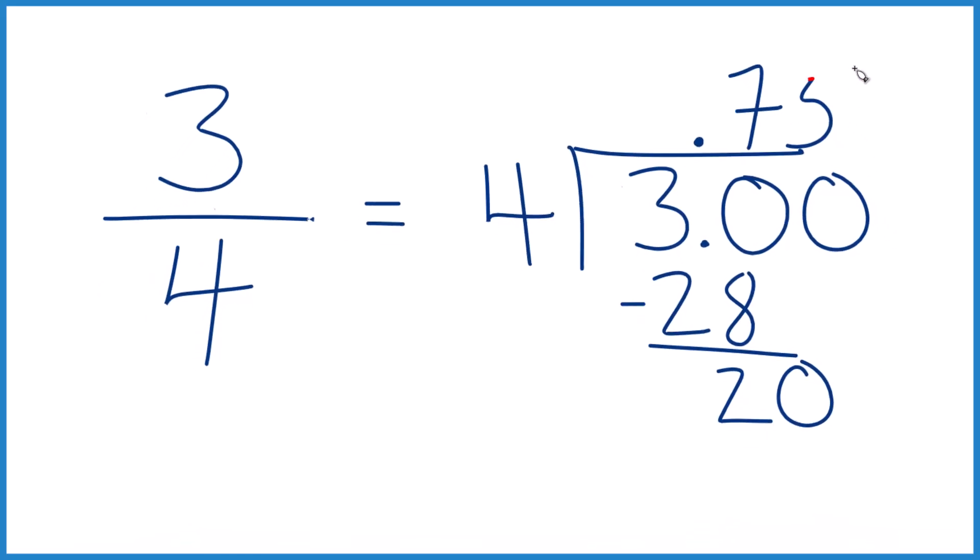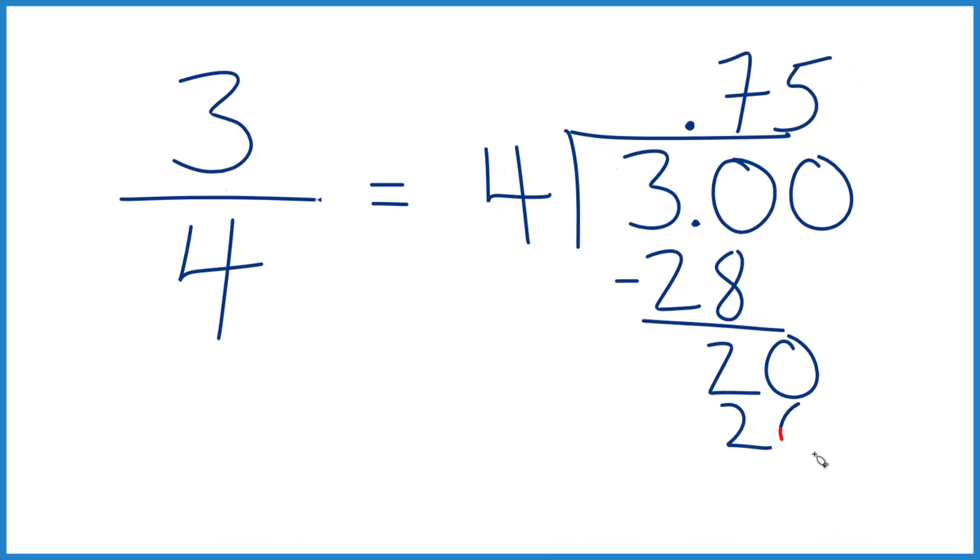And 5 times 4, that's 20, we subtract, no remainder, and that's it.